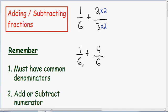Now that we have common denominators of 6, we can add these fractions quite easily. Our denominator stays the same, so we have a 6 in our denominator. In our numerator, we add the two numbers: 1 plus 4, which gives us a final answer of 5 over 6.